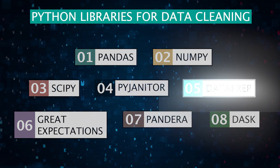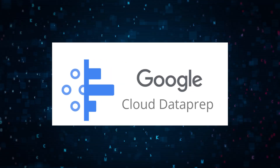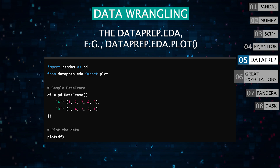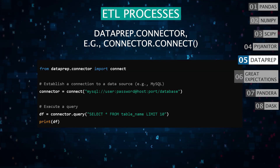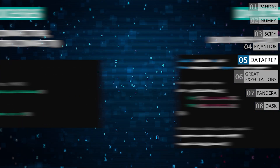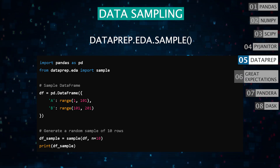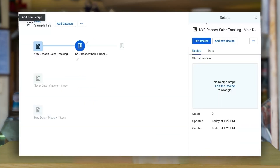Moving on to Dataprep — a library designed to make data preparation easier and faster. Use dataprep.clean to clean and format data, e.g., dataprep.clean.clean_missing. The dataprep.eda module helps in exploring and wrangling data efficiently, e.g., dataprep.eda.plot. Simplify ETL processes with dataprep.connector, e.g., connector.connect. Profile your data with dataprep.eda.create_report. Generate data samples with dataprep.eda.sample. Enrich data by integrating additional datasets. Dataprep is perfect for speeding up your data preparation workflows.